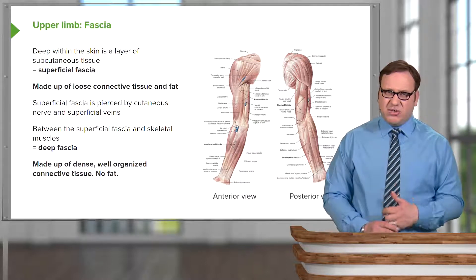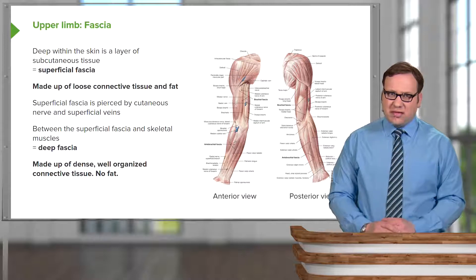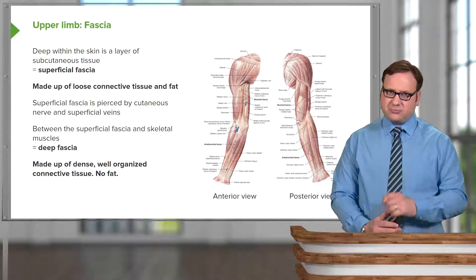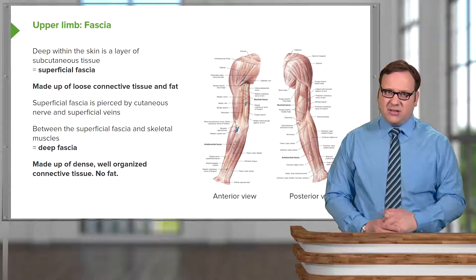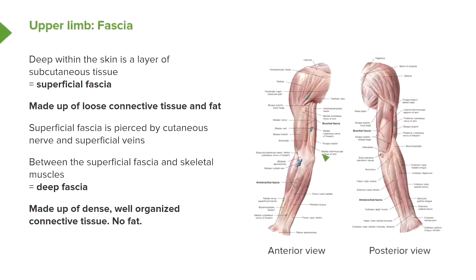Lying between the superficial fascia and the skeletal muscles — biceps brachii for example — we have the deep fascia. We can see on both the anterior and posterior views this white glistening membrane covering all of the muscles of the upper limb. It's made up of dense, well-organized connective tissue with no fat, so this is just a membranous layer that surrounds the muscles.